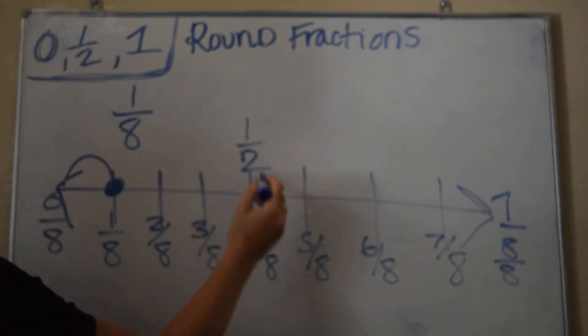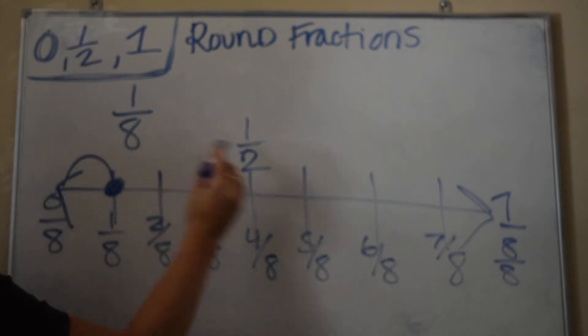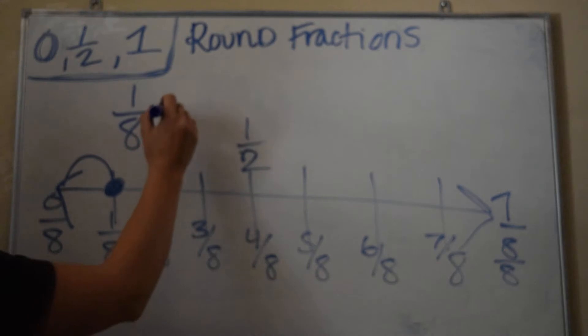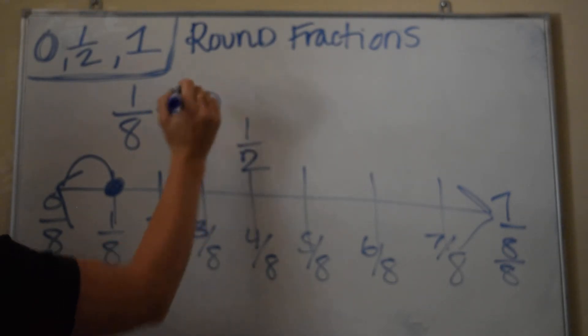while it's 1, 2, 3 away from a half, and 7 away from a whole. So it's closer to 0. So we're going to say 1/8 is rounded to a 0.